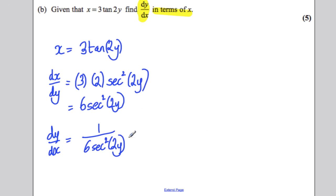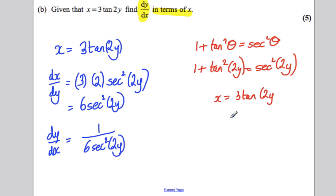Now that is in terms of y. You want it in terms of x. Just remember, there's a formula you know. That 1 plus tan squared of theta equals sec squared theta. So in particular, in this case, 1 plus tan squared of 2y must be sec squared of 2y. Now, do we know what tan squared is? Well, we know that x is 3 tan of 2y. So tan must be x over 3.